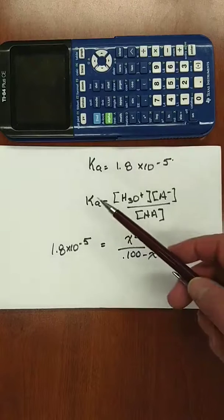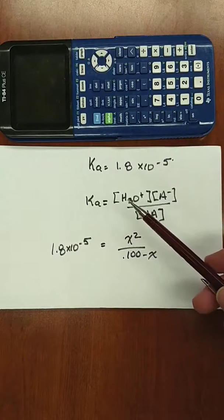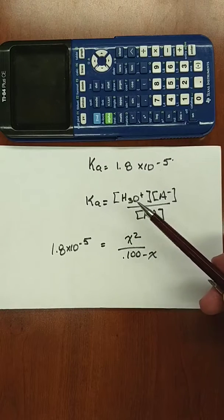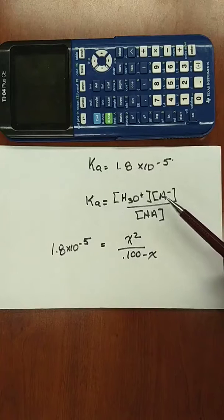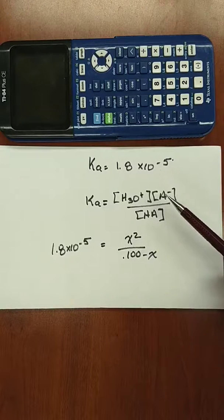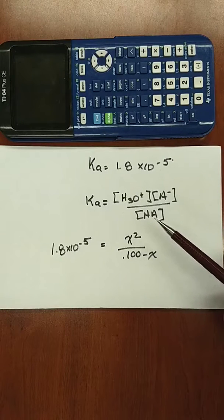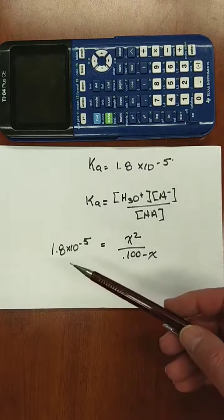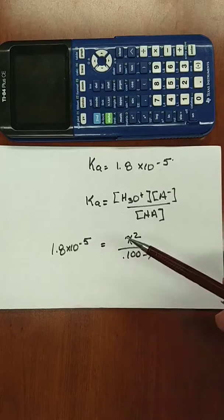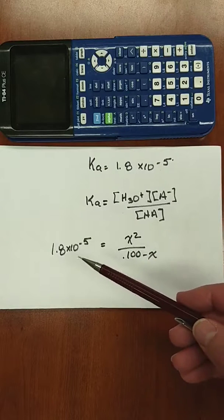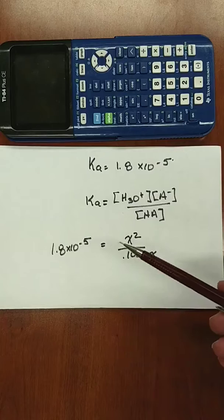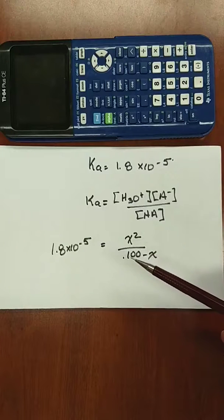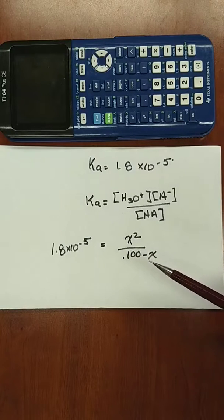For the reaction we showed, the Ka value should be equal to the equilibrium hydronium ion concentration times the A minus (the conjugate base) divided by the conjugate acid concentration, the molar concentrations. So we end up with an algebraic expression that we're going to need to find X for that looks something like this: Ka is equal to X squared divided by 0.1 minus X.